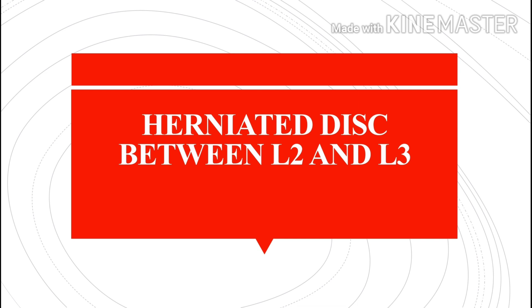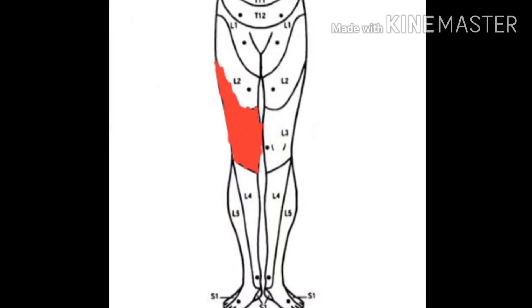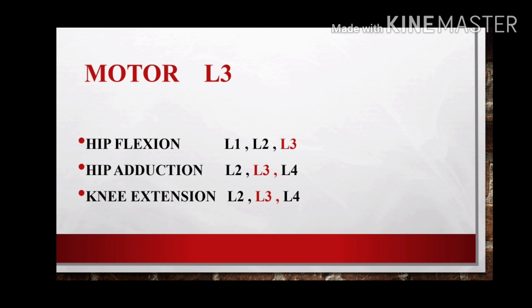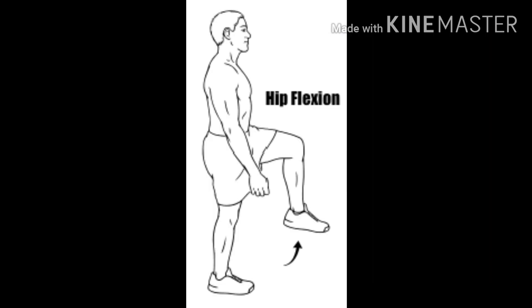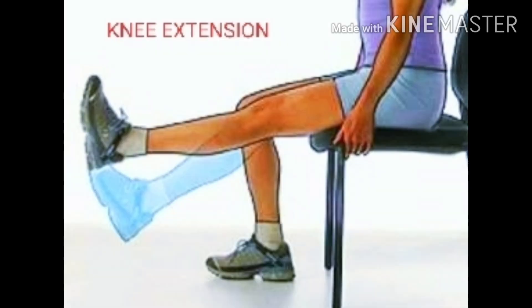If there is any herniated disc between L2 and L3, the L3 nerve root will get affected. The sensory area of the L3 nerve root is the distal anterior thigh and the anterior aspect of the knee joint. There are also three motor functions for L3: hip flexion by the iliopsoas, hip adduction by the adductor magnus, adductor longus, adductor brevis, gracilis, and pectineus muscles, and knee extension done by the quadriceps.